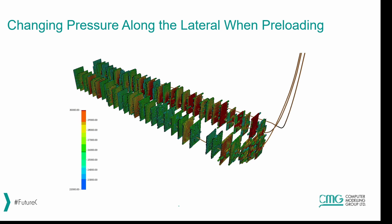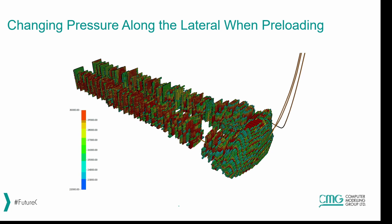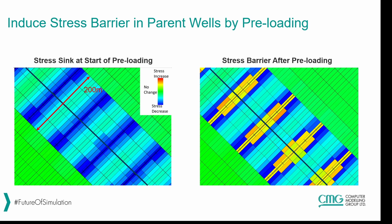This video shows the increase in pressure after injection is done. In the areas right around the perforations, pressure is increasing by as much as 30,000 kPa after injection is complete. This has a big impact on the stress around the parent wells. As you can see, there's an increase in stress around the parent wells which will provide a barrier to prevent child well fractures from hitting the parent wells — that is the goal of pre-loading.